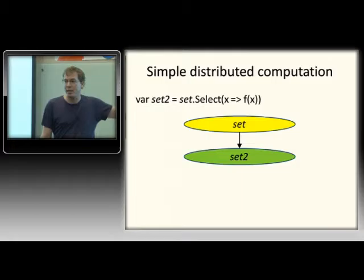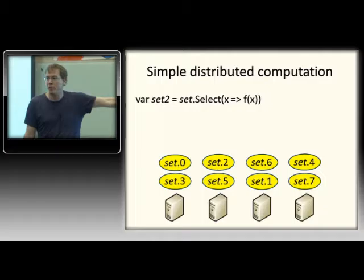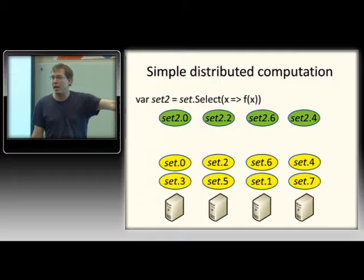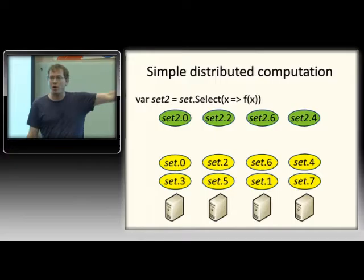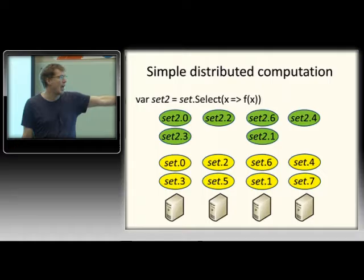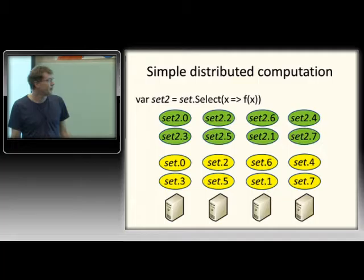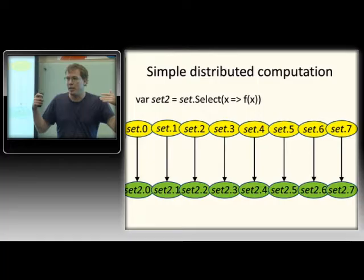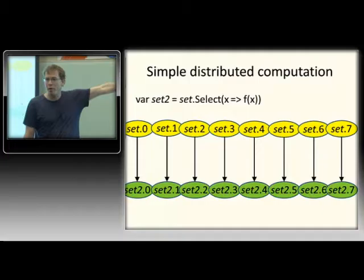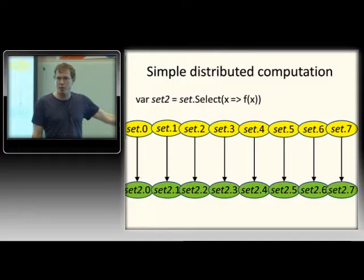If you're doing something like a select — which takes a collection to a new collection — what's going to happen is you start out with all these partitions on the cluster computers, and it runs the select on each subset individually, because select is completely independent for each element. So each computer gets to start in parallel, and as they finish their part of the dataset, they can start the next one they have. Eventually, all of them will get computed in parallel across the cluster.